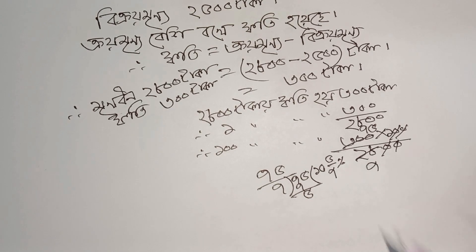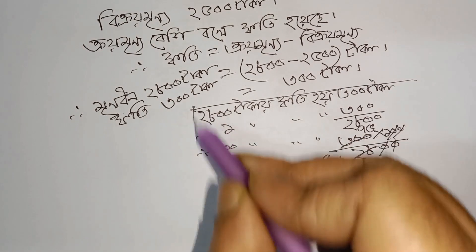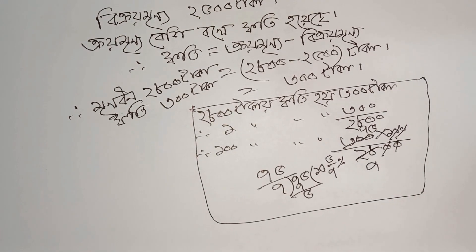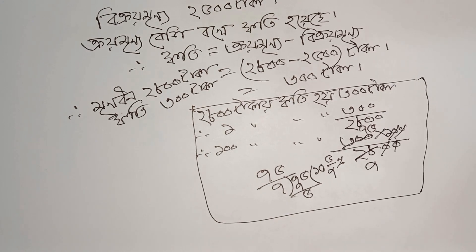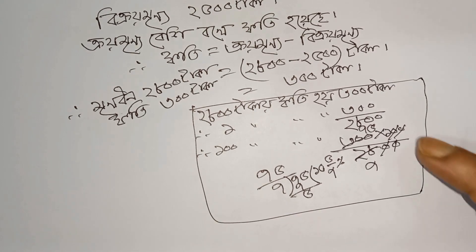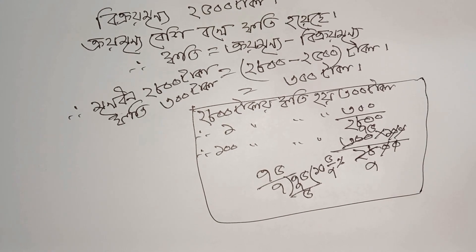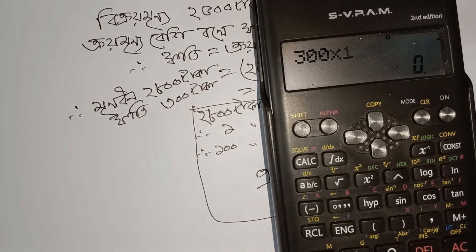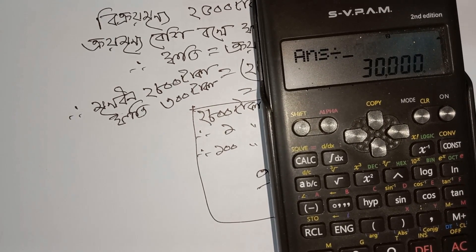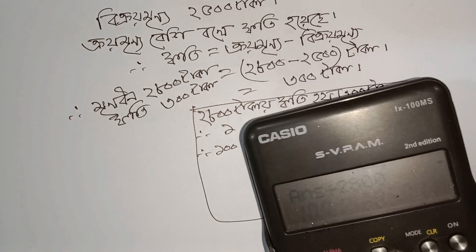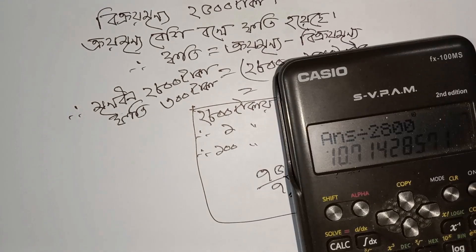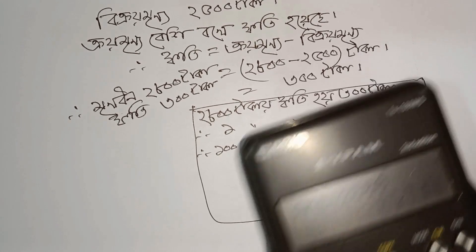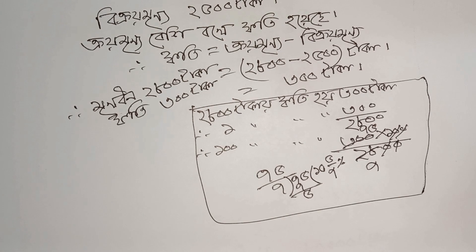This is the result. So, if we check the calculator, we will have to calculate 300 plus 300 plus 300 plus 800. So, we are going to calculate 10.71, which is 10.71. I will see you in the next video. Good luck.